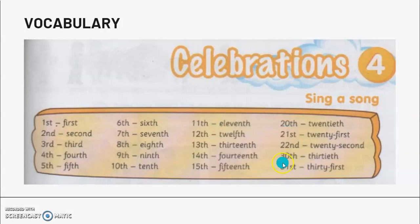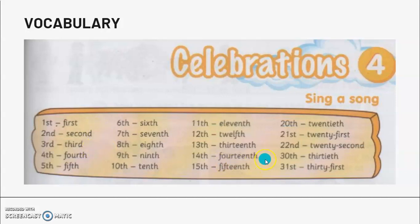So, this is what we call ordinal numbers. Ordinal numbers are usually used to show places — tempat, kedudukan — which position something is. For example, first means yang pertama, second means yang kedua, third means yang ketiga, fourteenth means yang ke-empat belas, thirtieth means yang ke-tiga puluh. And usually, we use ordinal numbers in dates — tarikh.